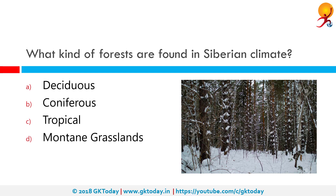What kind of forests are found in a Siberian climate? Siberian type climate is typified by bitterly cold winters of long duration and cool brief summers, and lies across the 60-degree north of the equator. The predominant vegetation is evergreen coniferous forests. The conifers, which require little moisture, are best suited to this type of subarctic climate.